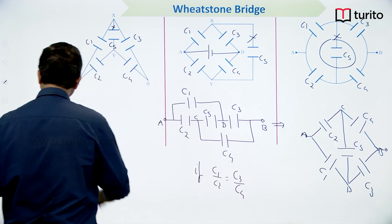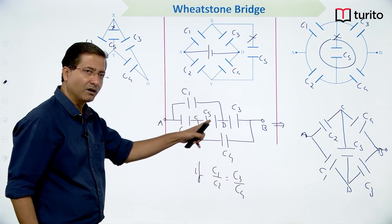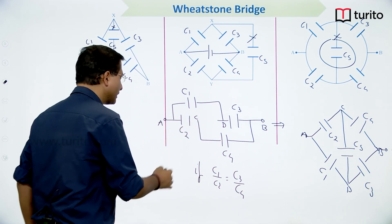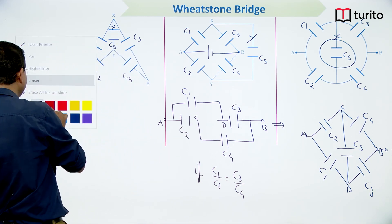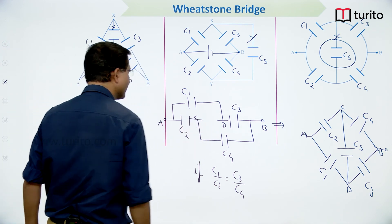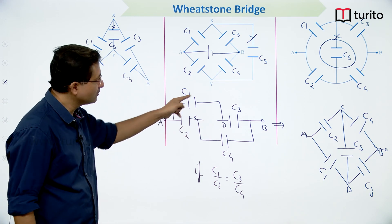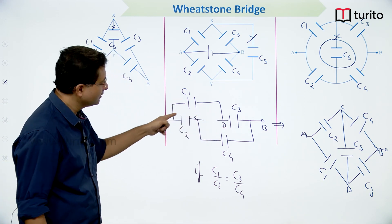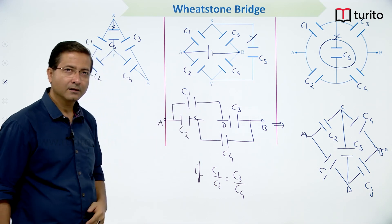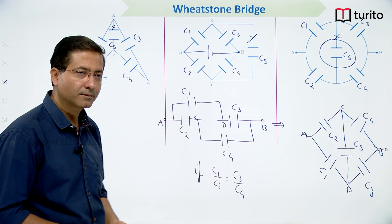Since the bridge is balanced, C5 (= 2C) can be removed. Now C1 and C3 are in series, and C2 and C4 are in series. The whole concept is clear.